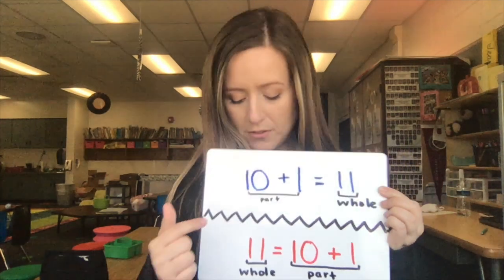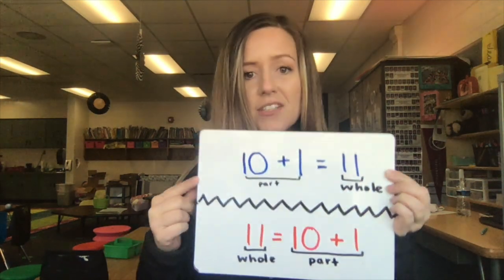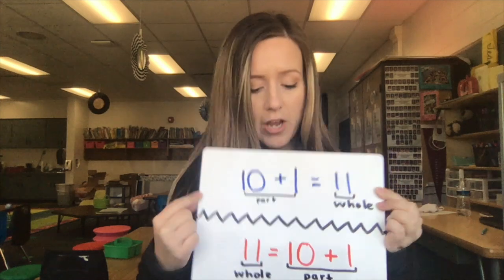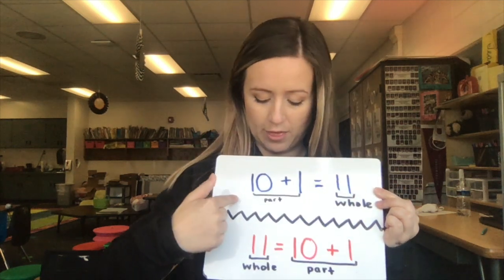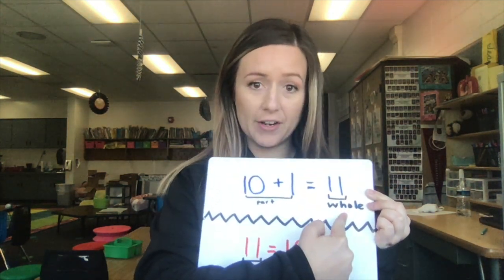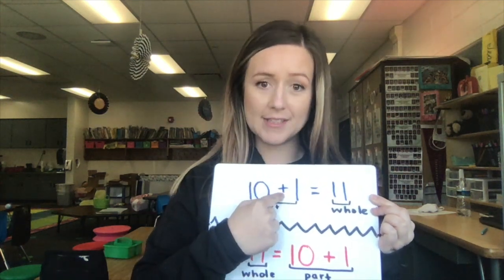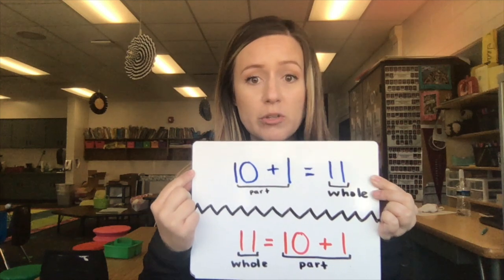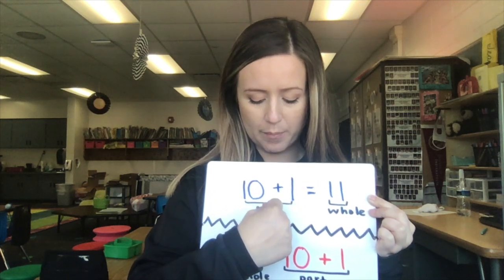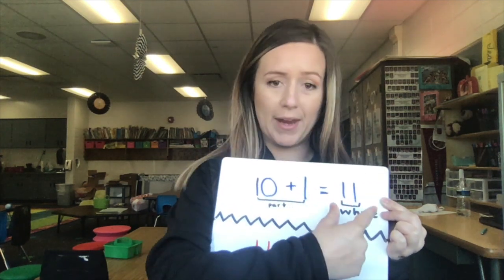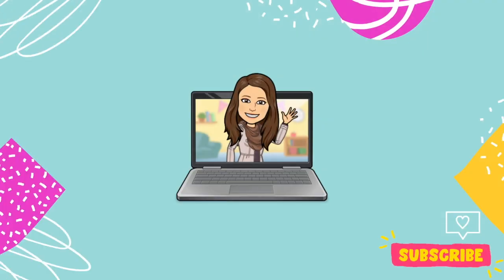In these equations our plus and equal signs are moved around. What you need to know is that 'equals' means 'the same' — wherever you have equals, the things on one side need to be the same as the other. You also need to know that 'plus' means 'join' — whenever you use the plus sign you are joining things together. So here we are joining the parts 10 and 1 to make the whole 11. That's all for today — thank you so much for learning with me!